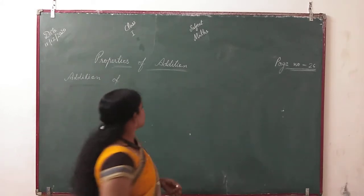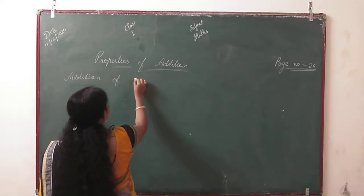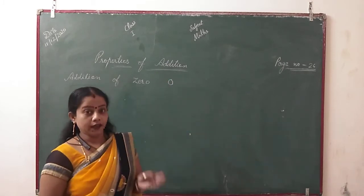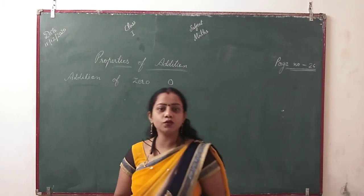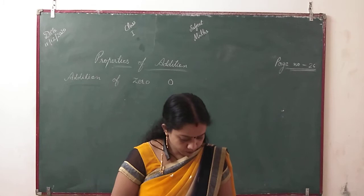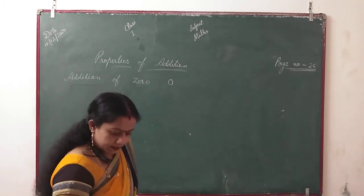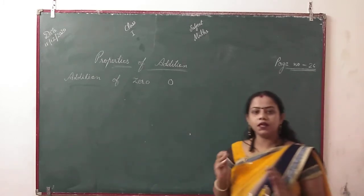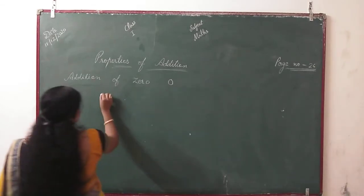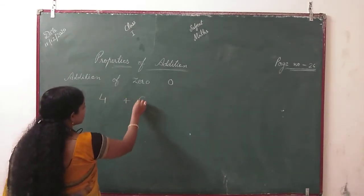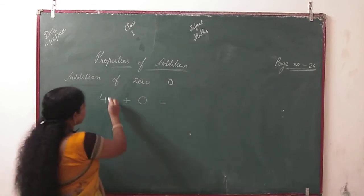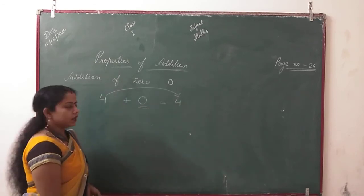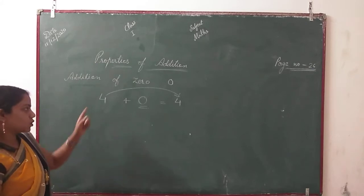The second property is addition of zero. When zero is added to a number, does zero add anything? No. Whenever we add zero to a number, the answer will be the number itself. For example, the number is 4. We add 0 with 4. Because 0 is no number, we cannot add anything with it.